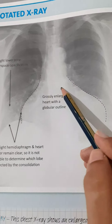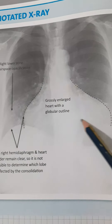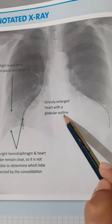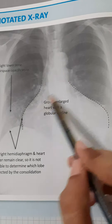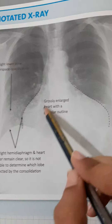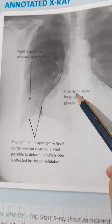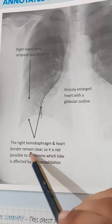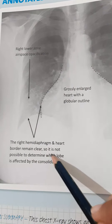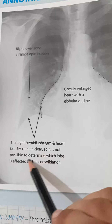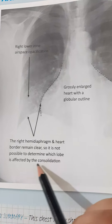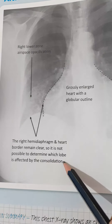There is gross enlargement of the heart with a globular outline. The right hemidiaphragm and heart borders remain clear, so it is not possible to determine which lobe is affected by the consolidation.